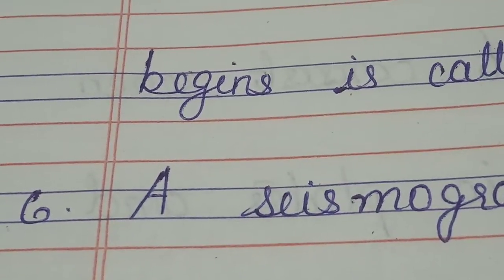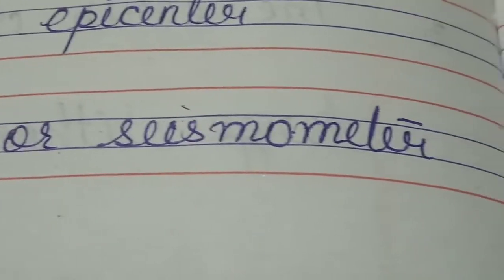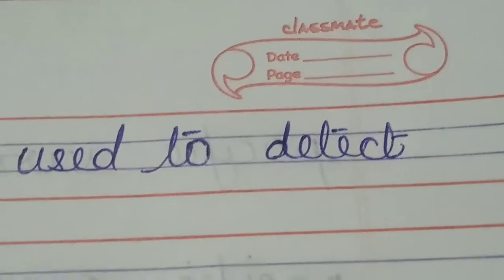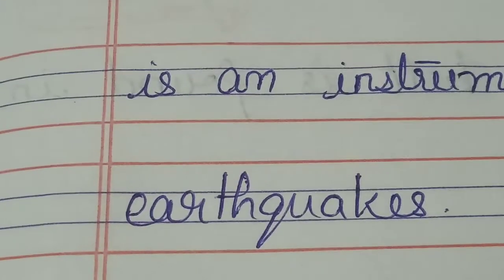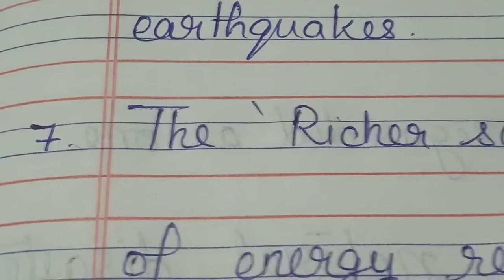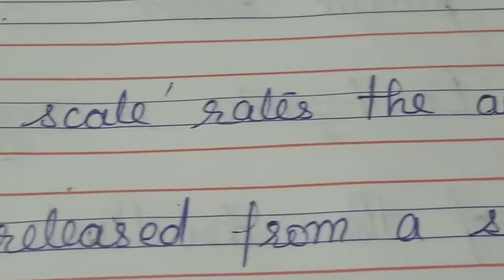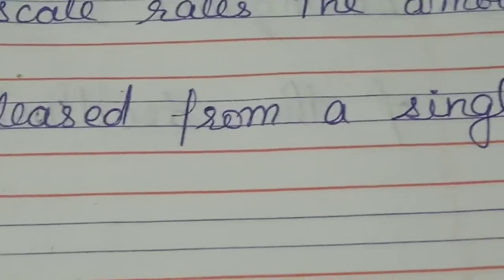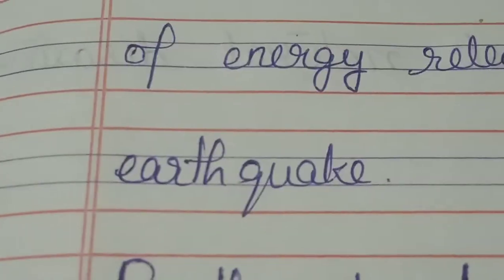A seismograph or seismometer is an instrument used to detect earthquakes. The Richter scale rates the amount of energy released from a single earthquake.